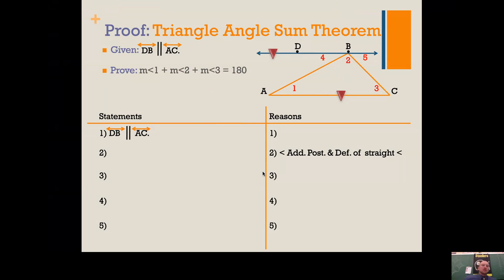This will be part four of our lesson on section 4.1. A couple videos ago we looked at this proof, but we didn't do anything with it. We're going to prove it now - the triangle angle sum theorem. We have this diagram with parallel lines, and we need to prove the measure of angle 1 plus angle 2 plus angle 3 equals 180. Notice how those are the angles of a triangle.